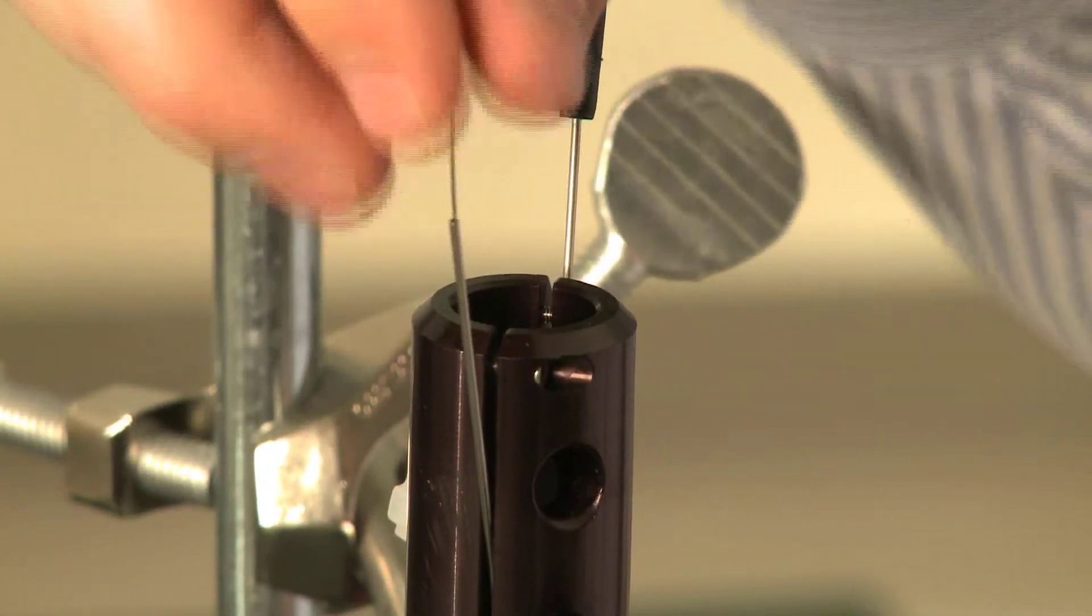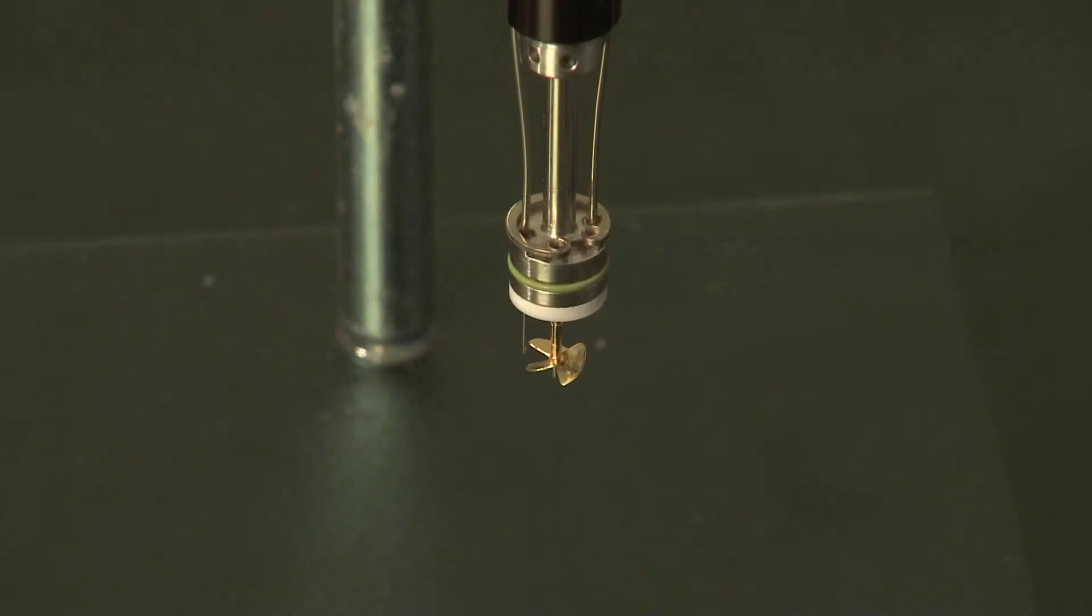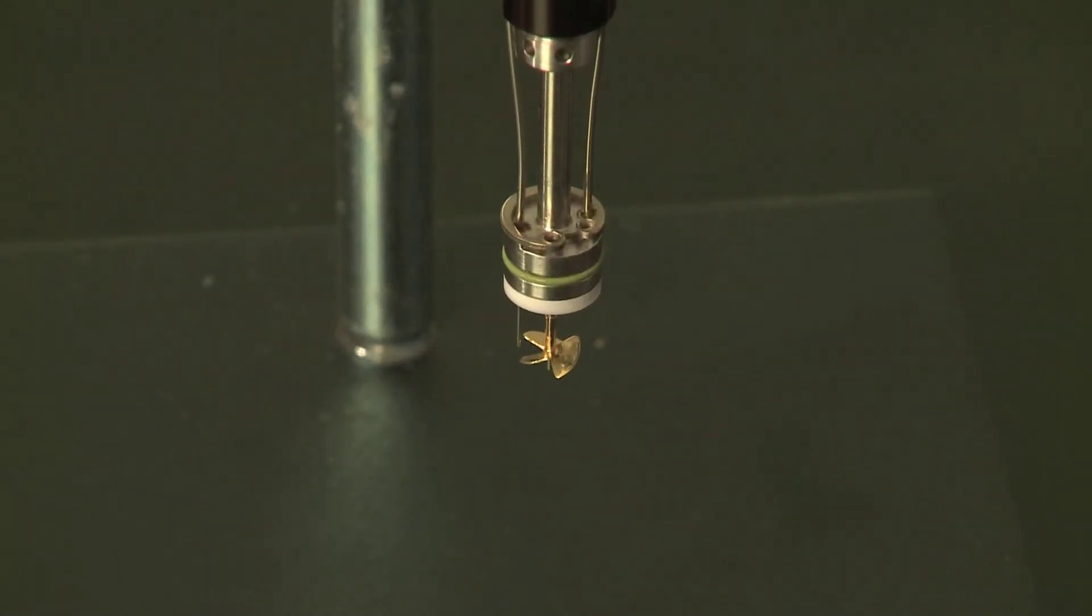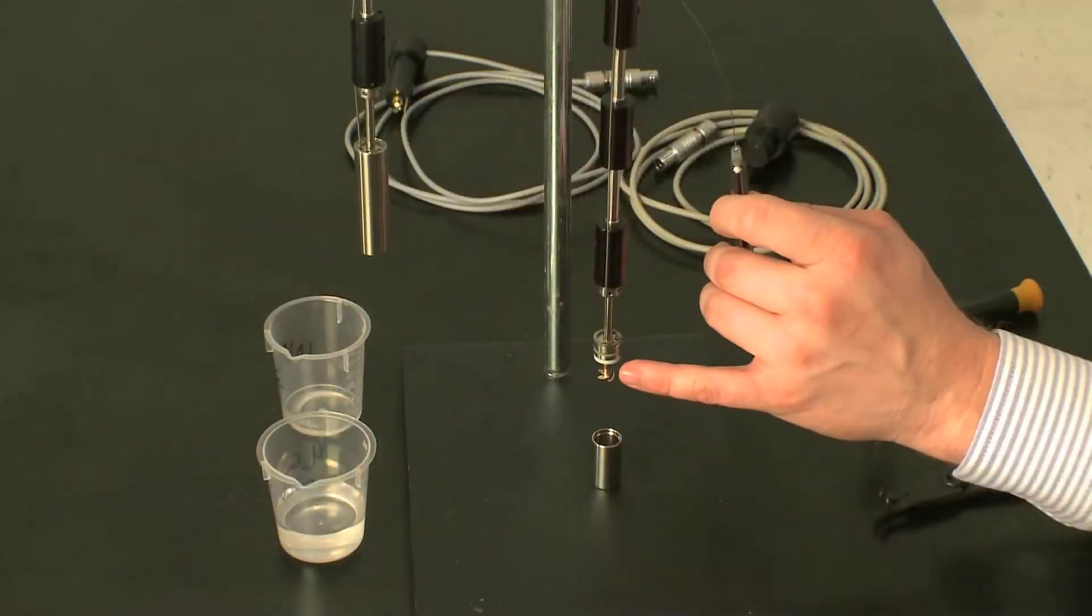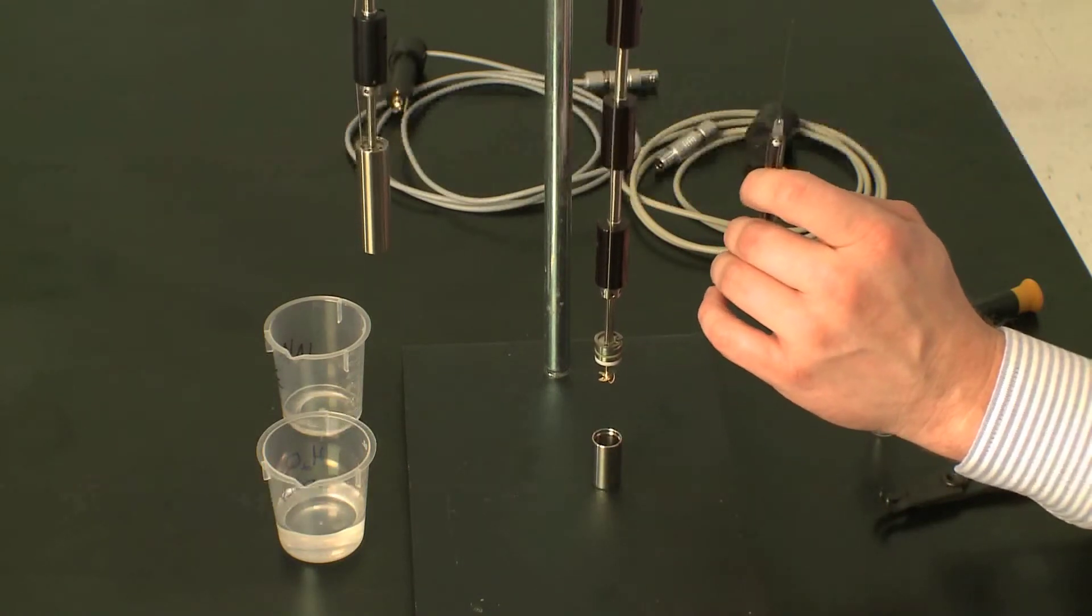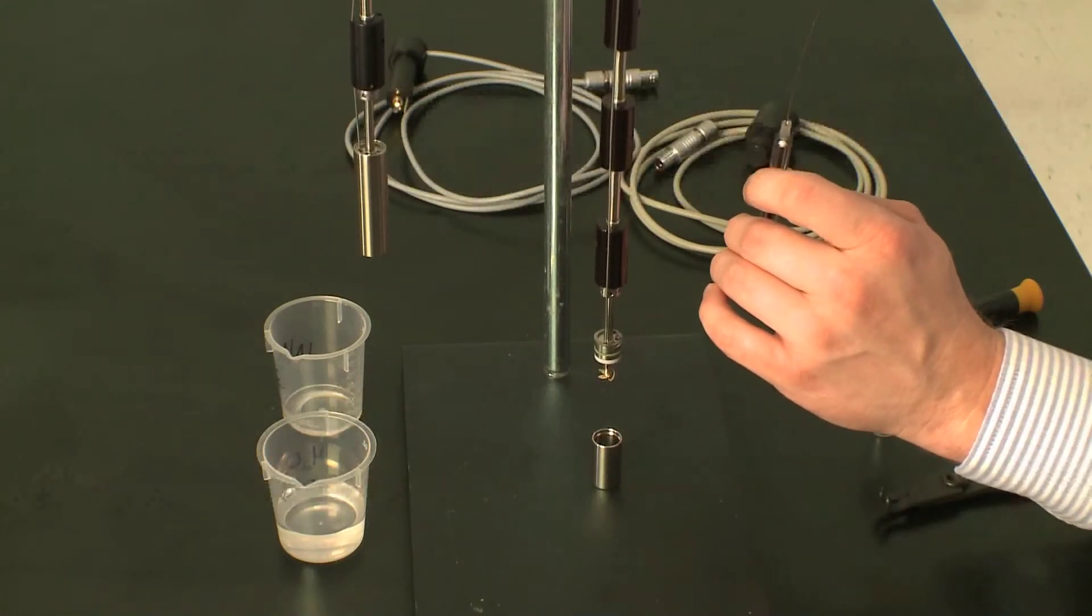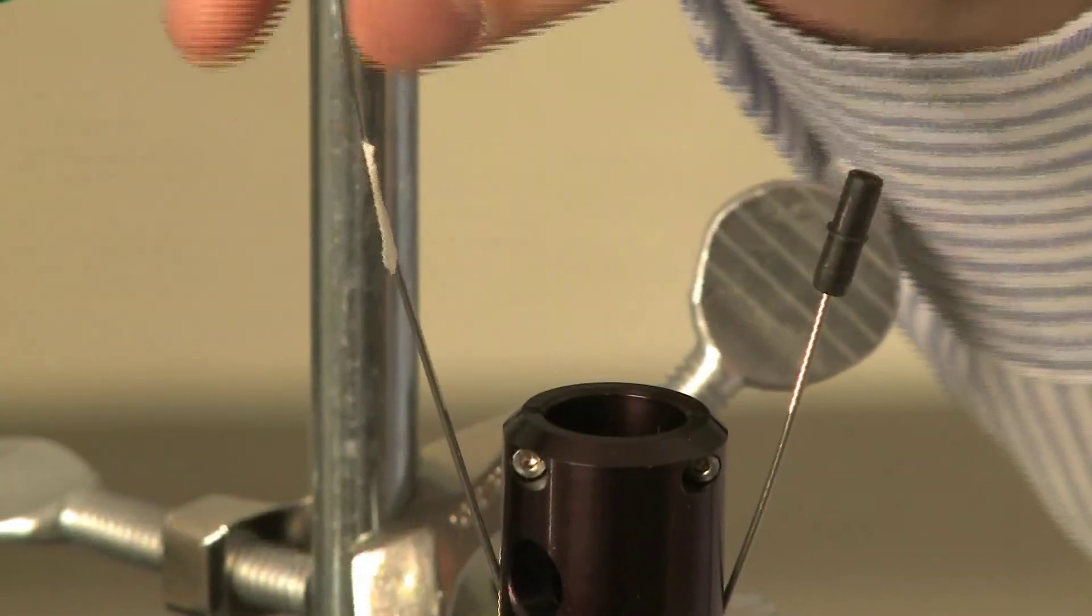I'm going to watch the height of the syringe cannula with respect to the stirrer. You see here, I'm about 1 to 2 millimeters above the stirrer. I have a piece of tape to mark the position.